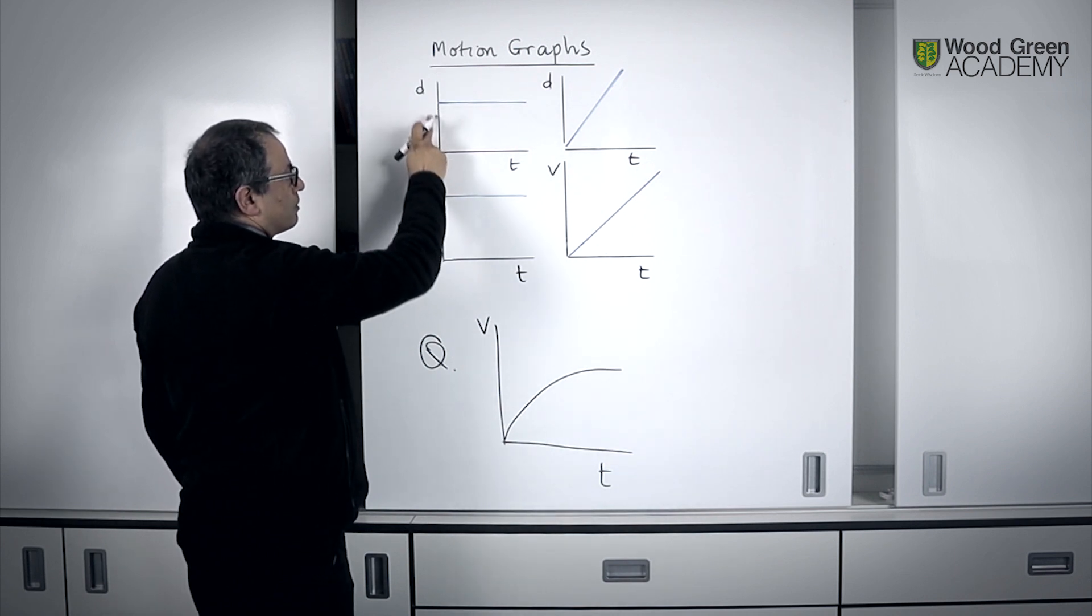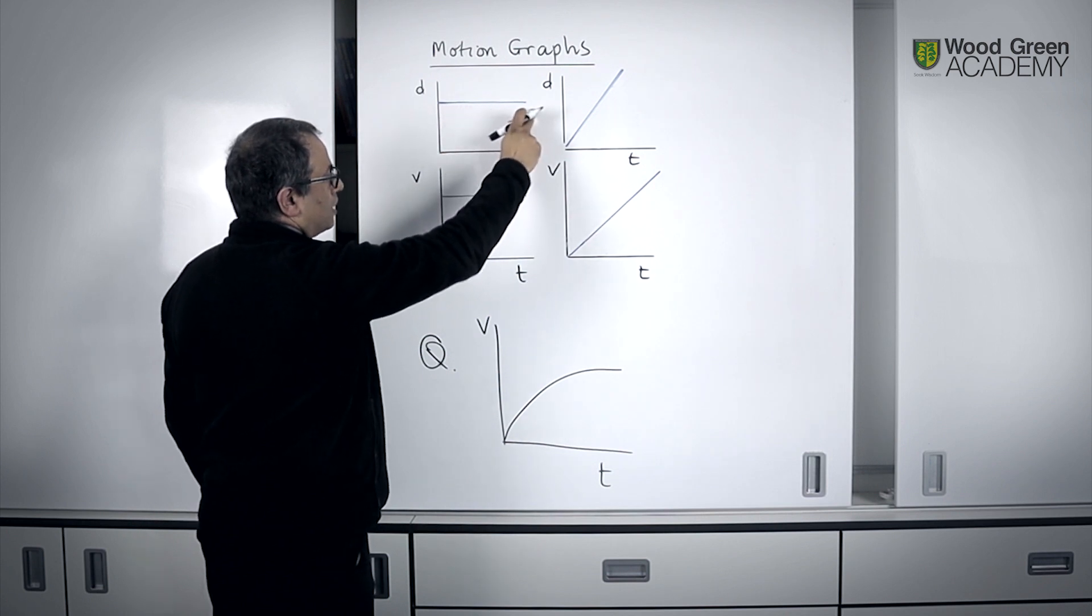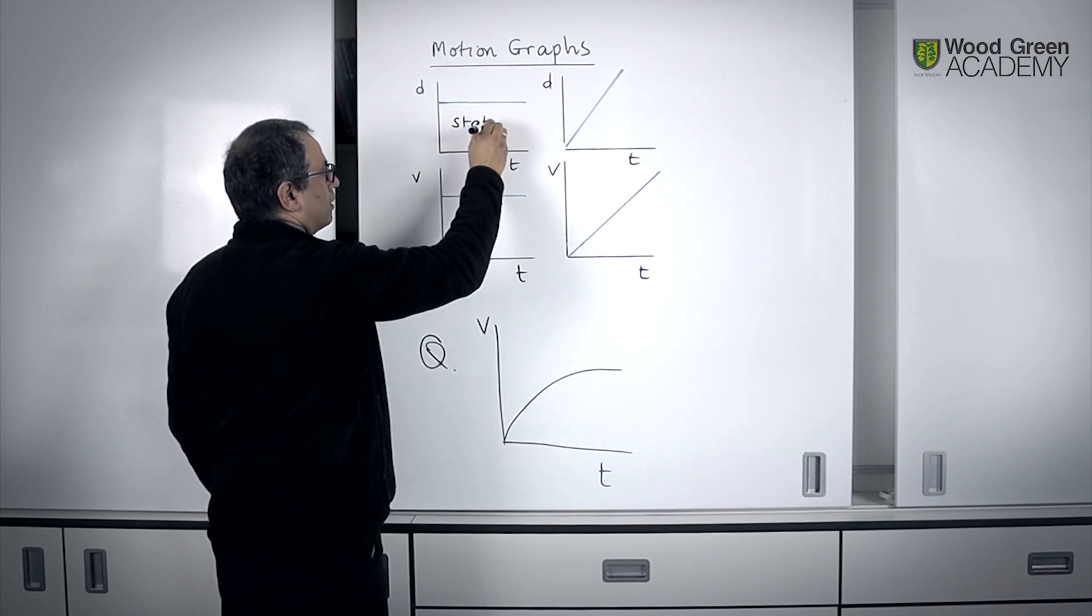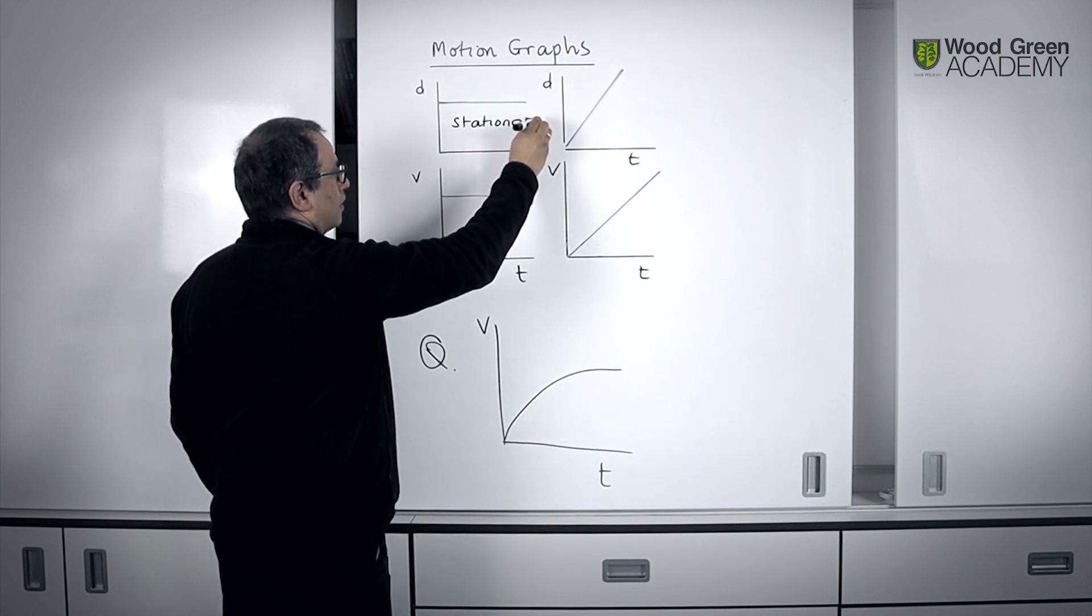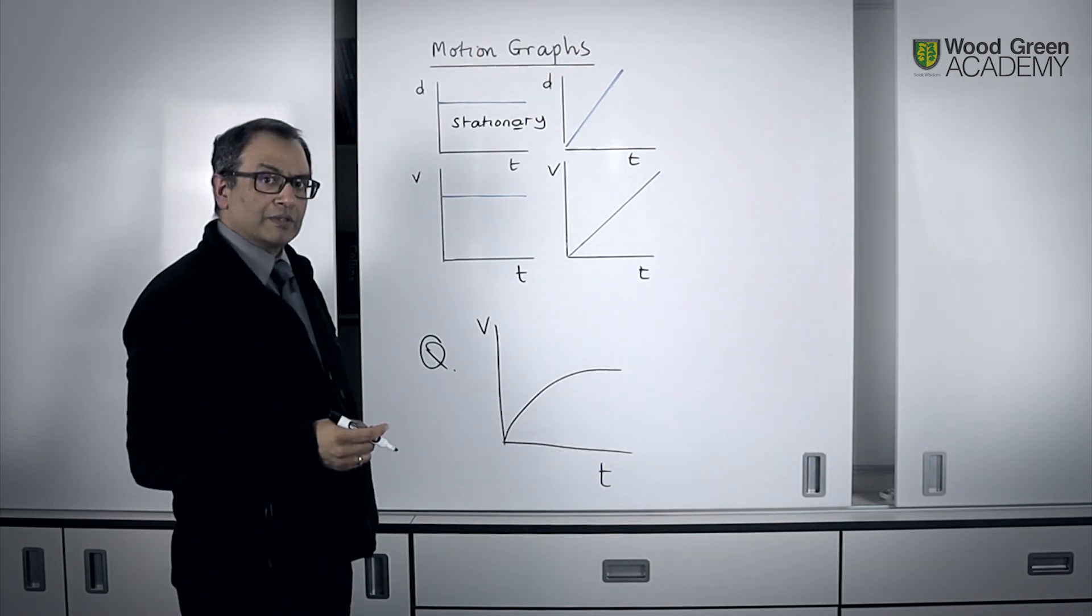In the first one, this distance-time graph, you will notice that the distance does not change with time. The object is stationary. Stationary, of course, with an A. We're not talking about envelopes.